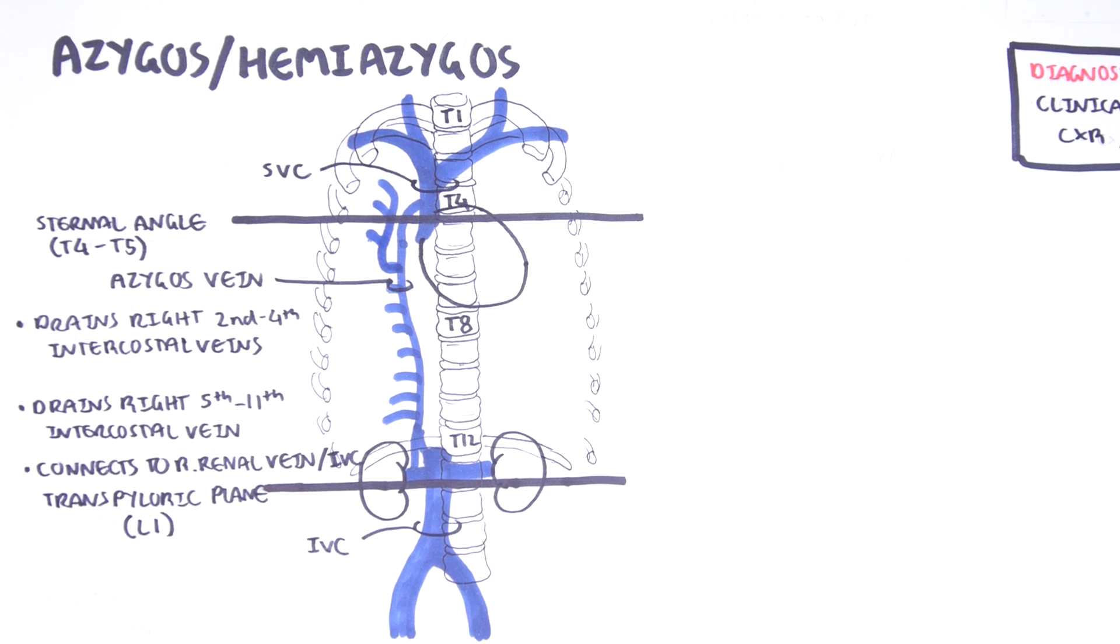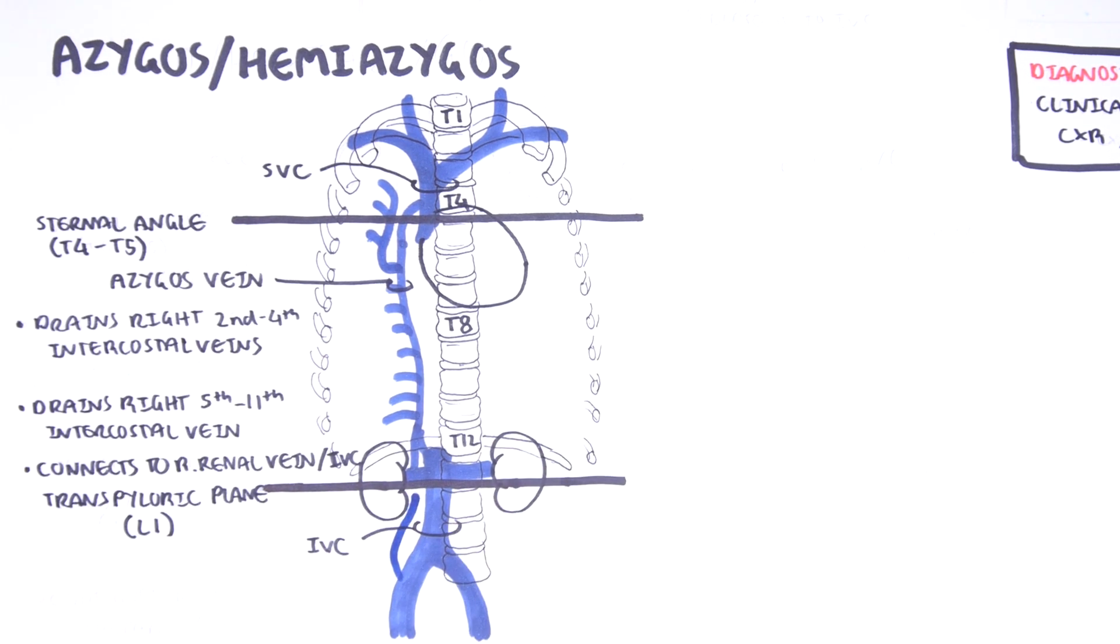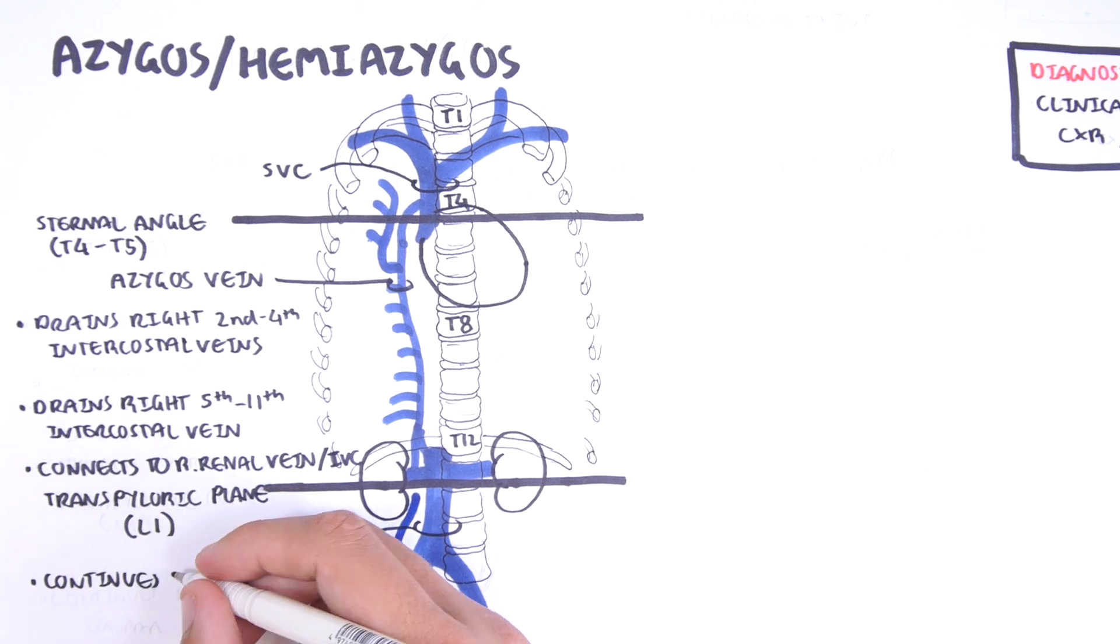The azygos vein is the continuation of the right ascending lumbar vein.